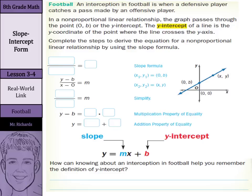An interception in football is when a defensive player catches a pass made by an offensive player. In a non-proportional linear relationship, the graph passes through the point (0, b), which is here on the graph, or the y-intercept, where it crosses the y-axis. The y-intercept of a line is the y-coordinate of the point where the line crosses the y-axis — that b, wherever it is on the y-axis, that's where it crosses.